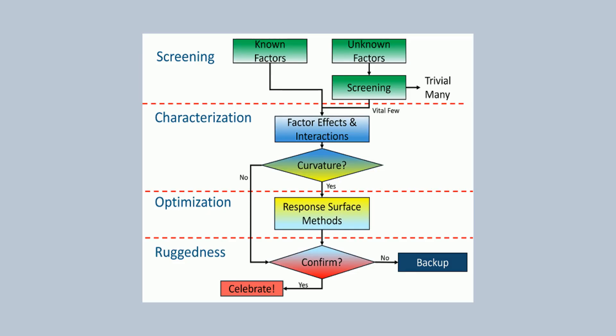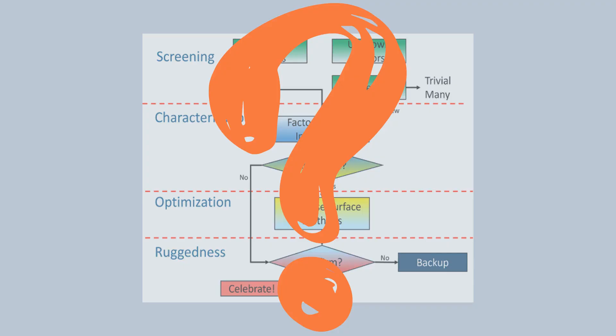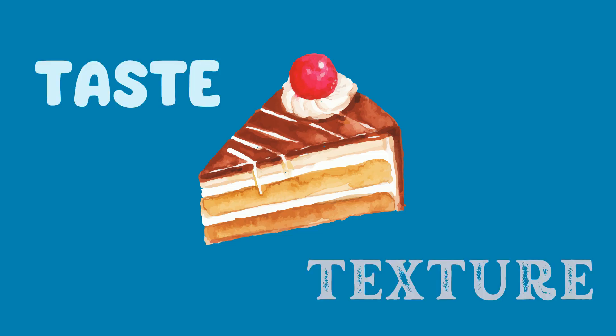We use DOE when we want something to be different about our product or process. So the first step to designing your experiment is to identify your opportunity. What about your system do you want to change? With our example cake, we want to study how certain variables affect the taste and texture, two identifiable properties of the finished product.